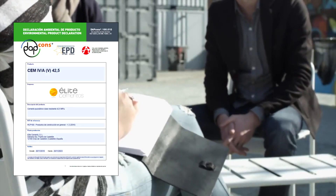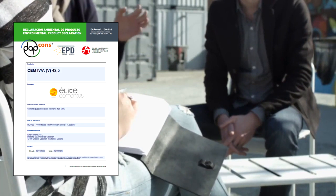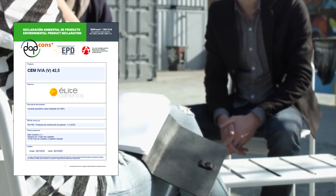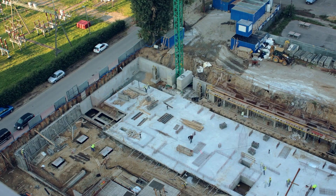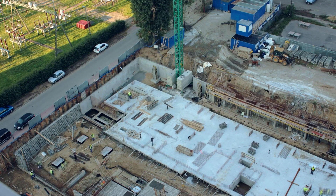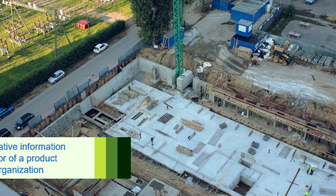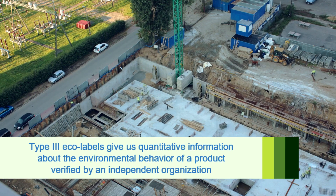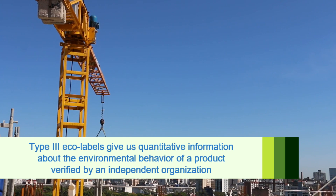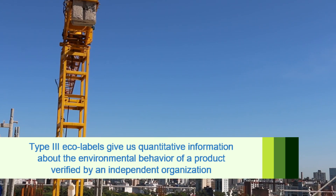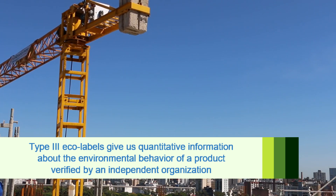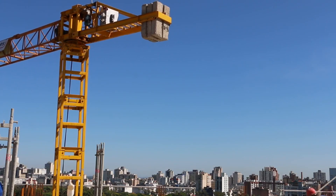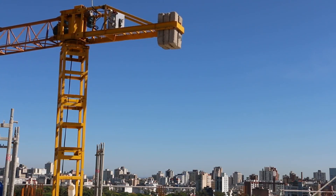Thanks to DAPCONS, the stakeholders involved in the construction and rehabilitation of buildings — such as the prescribers of materials — may have the necessary information to choose materials and products based on environmental criteria. With these Type III Ecolabels, companies can demonstrate their involvement and respect for the environment, as they give information to technicians when choosing more respectful products and adopting sustainable measures within the sector.